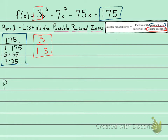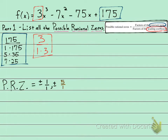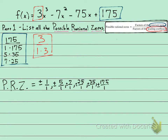My possible rational zeros are going to be the positive and negative of all of these fractions. Starting with the smallest numbers over denominator 1: plus or minus 1 over 1, plus or minus 5 over 1, plus or minus 7 over 1, plus or minus 25 over 1, plus or minus 35 over 1, and plus or minus 175 over 1.